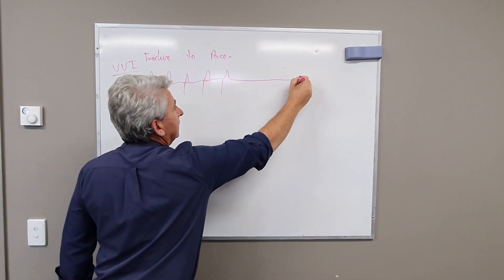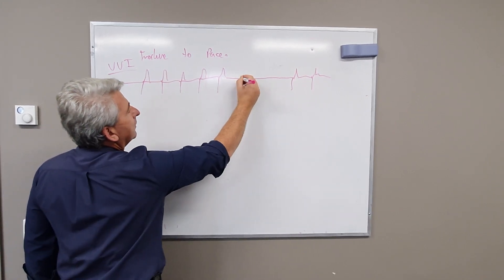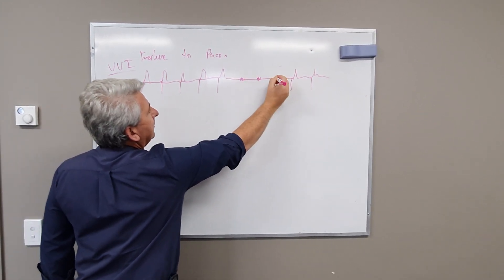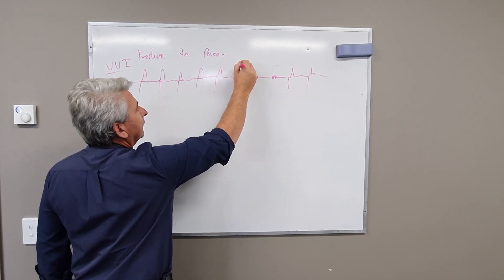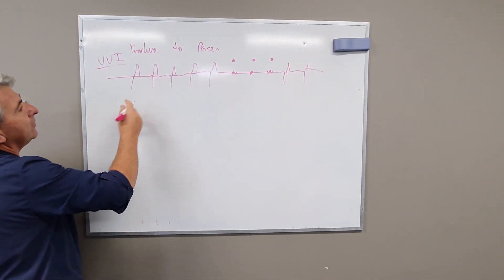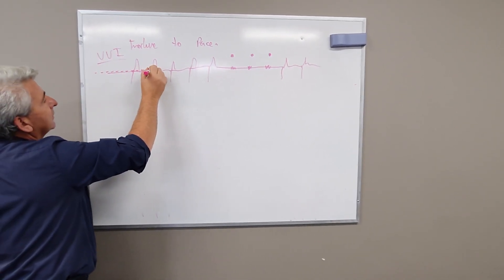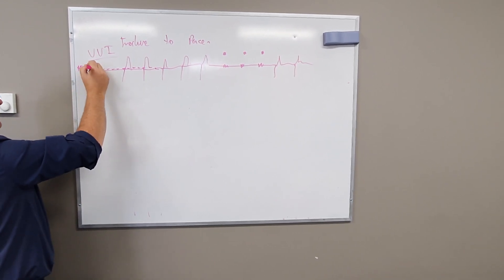So you've got these pacing spikes that are followed by a mechanical capture. But what happens in failure to pace is you don't actually have any pacing spikes, and then they start again. And what's happened here is it's picked up electromagnetic interference, and you'll see a flash of sensitivity on the pacemaker.